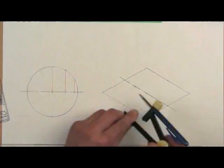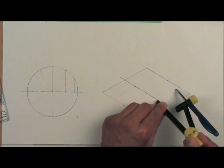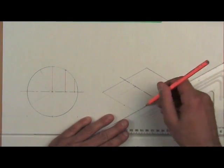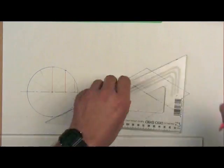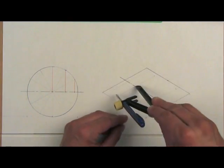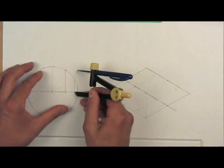Now measure the length of the lines and transfer them to give you the points on the isometric circle as shown. Because the circle is symmetrical you can use the same measurements on either side of the center line.